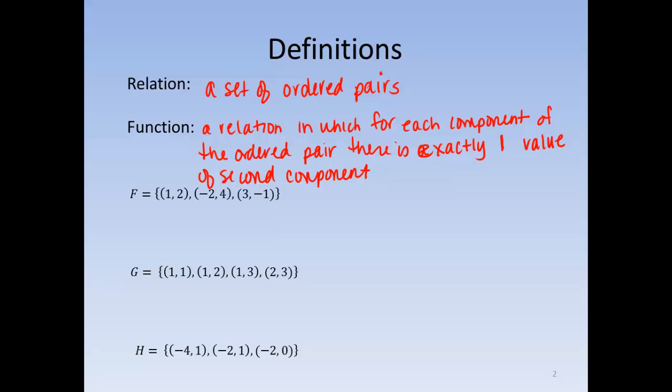So we will find out by looking at the first component and seeing if it repeats itself with a different second component. So we can say here that the first elements are 1, negative 2, and positive 3.